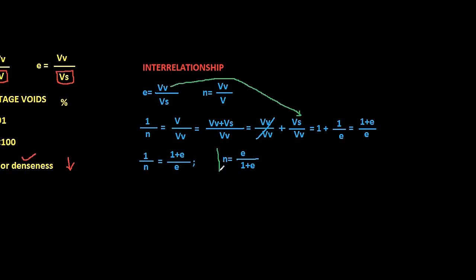Now this is a pretty important equation we will be using afterwards. Also by using vice versa, we will get E in terms of N. From this equation, let's cross multiply. Then we get N plus NE is equal to E. N is equal to E minus NE.